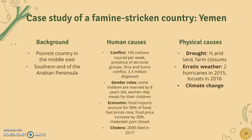A case study of a famine-stricken country: Yemen. Yemen is the poorest country in the Middle East, located on the southern end of the Arabian Peninsula. Human causes of the famine include conflict — hundreds of billions injured per week — the presence of terrorist groups, Shia and Sunni conflicts, 3.3 million people displaced, and gender roles where some children are married by age eight and women skip meals to provide food for their children.